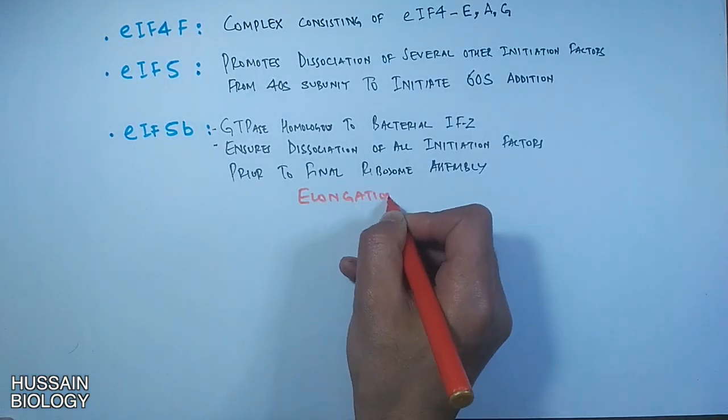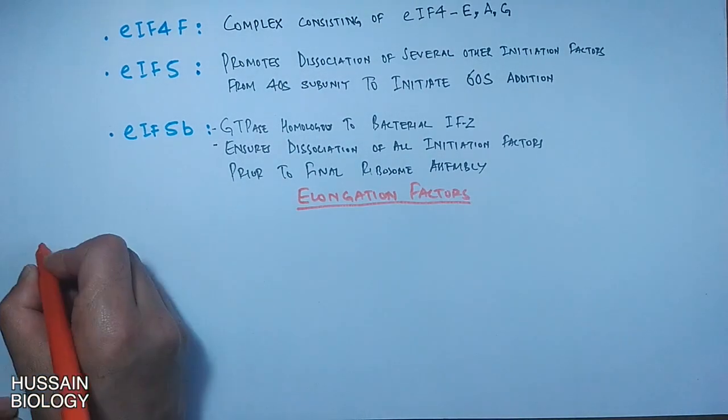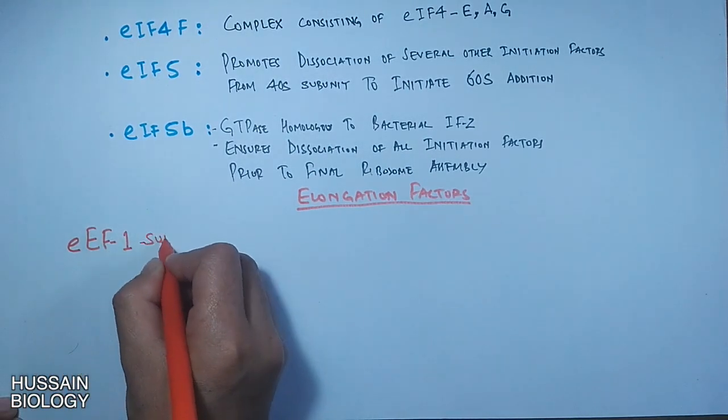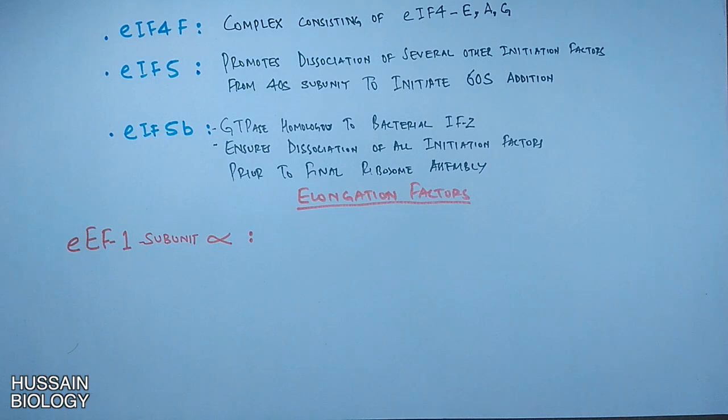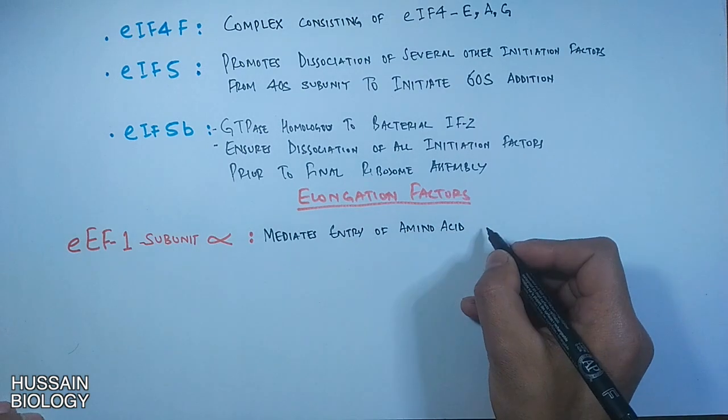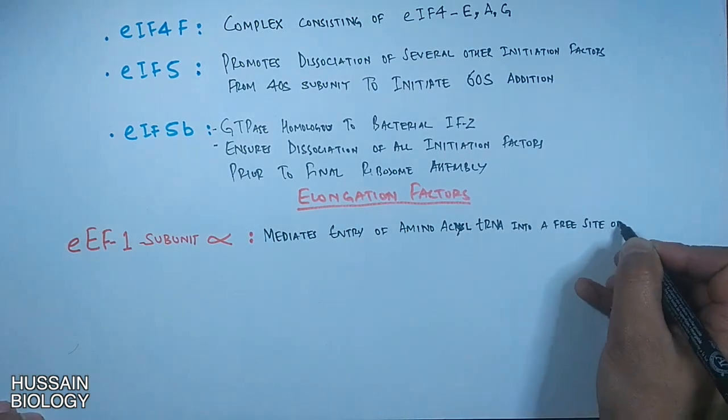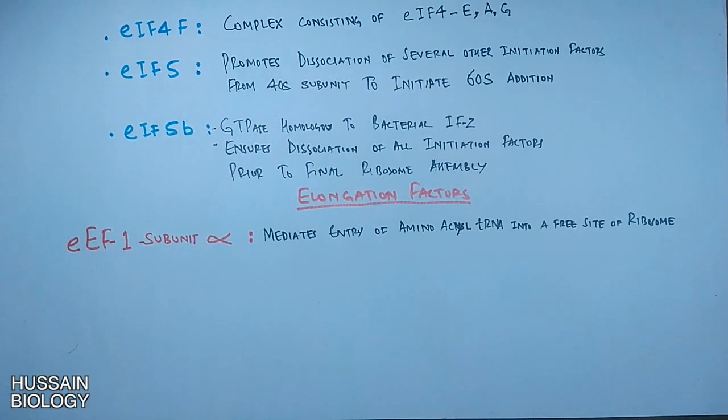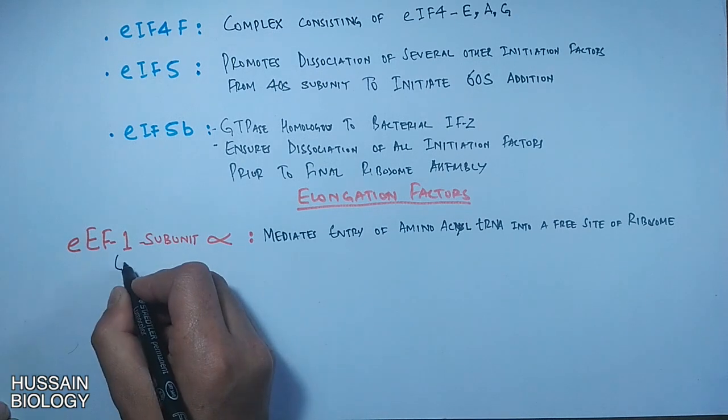Now let's head towards elongation factors. First we have EEF1 alpha subunit, eukaryotic elongation factor 1 alpha subunit. It mediates the entry of aminoacyl tRNA into the free A site of ribosome. This elongation factor is functional analog of EFTU in prokaryotes.